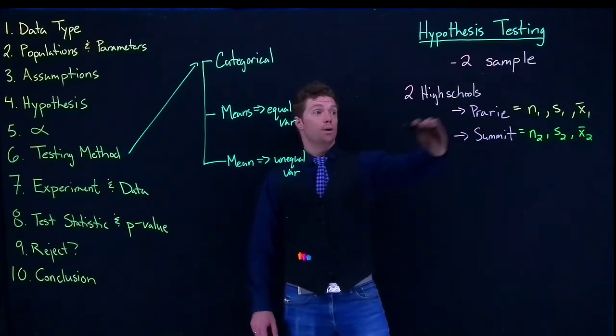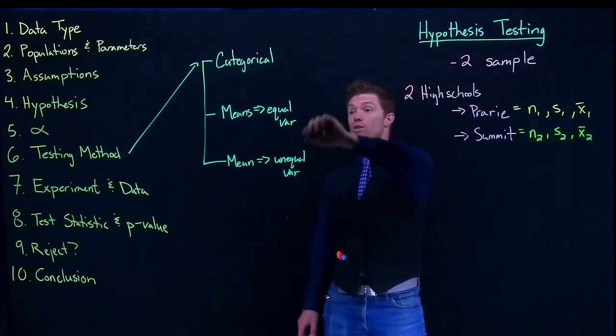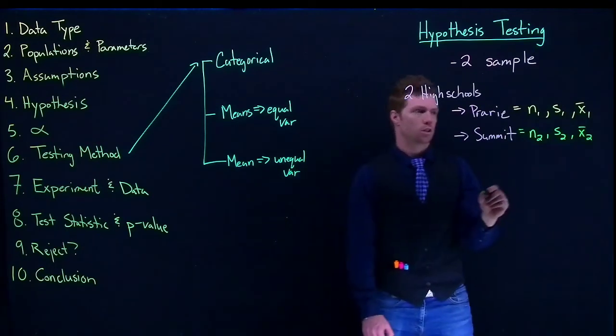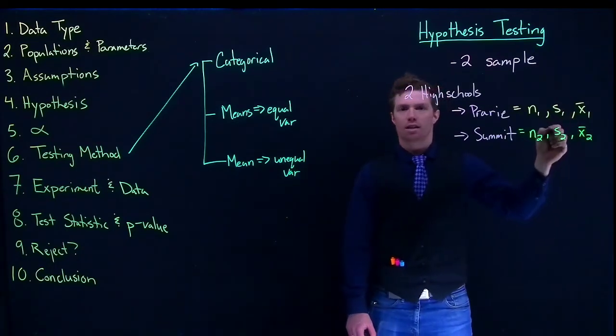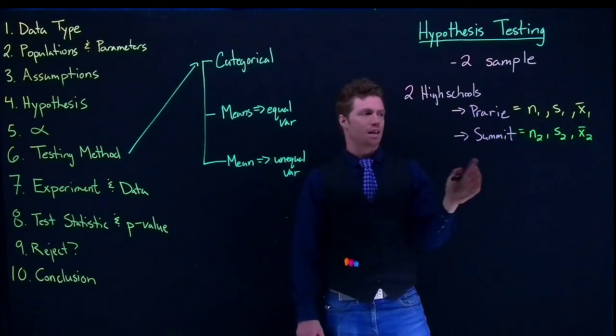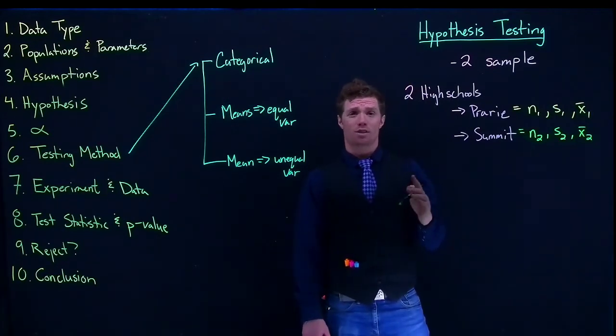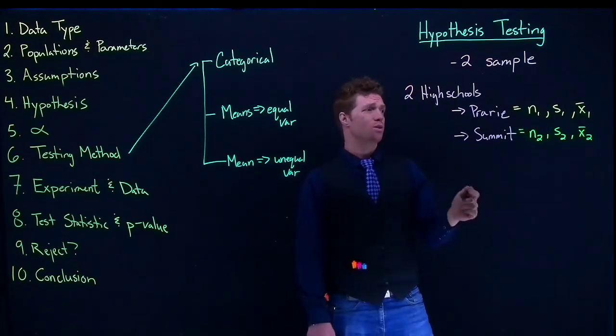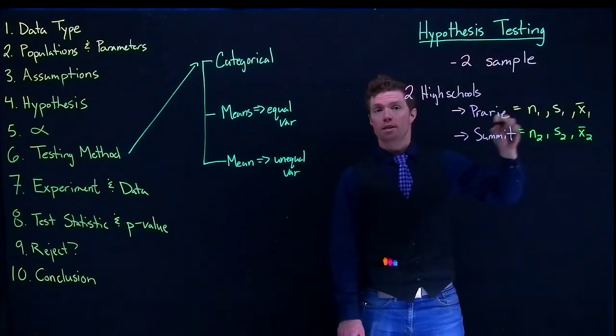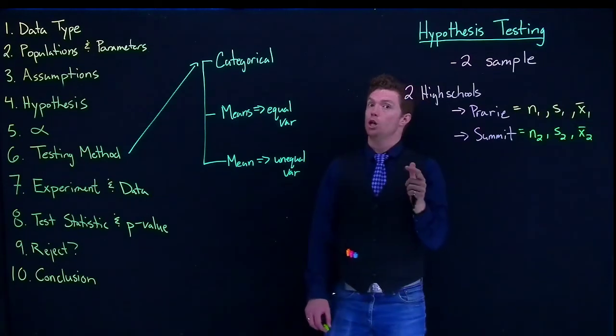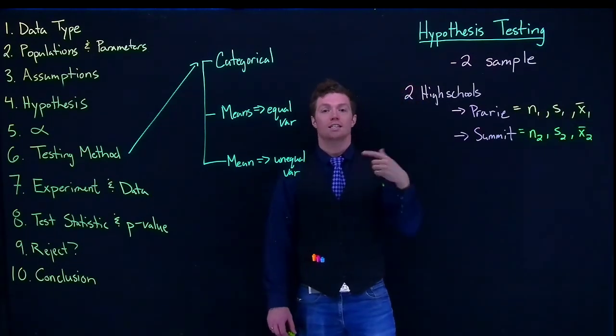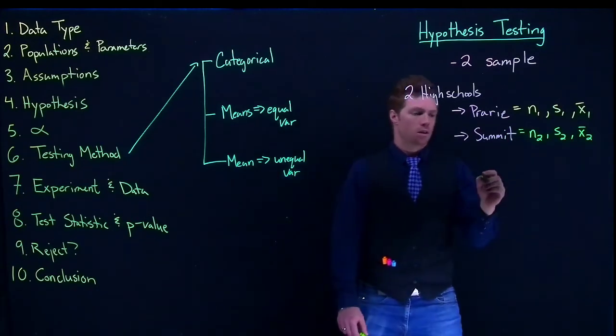If we're comparing these two groups and we want to know, do they have equal variances or not? Here's the check that we want to do. One of these standard deviations is going to be bigger than the other. The likelihood that they're going to be exactly equal from your samples is essentially zero. So they're going to be different, but we want to know, are they close enough for us to consider them equal?